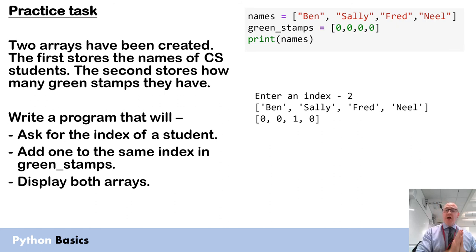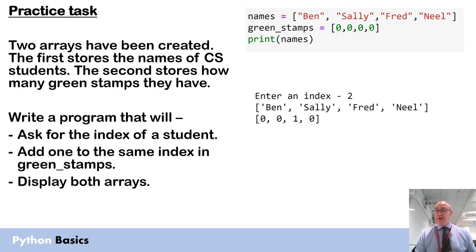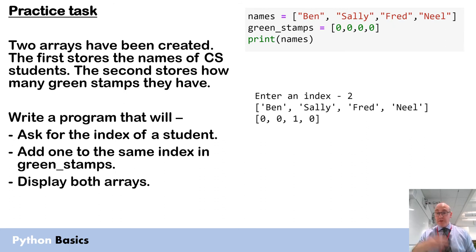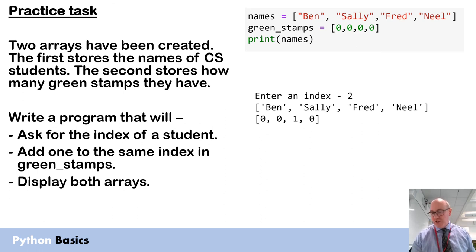In this practice task, have a go and then pause the video before checking the model answer. You have two arrays: names and green stamps. Names are the names of students and green stamps are how many green stamps each student has. Index 0 is Ben, Ben has no green stamps, Sally has no green stamps, Fred has no green stamps, and so on. Ben's green stamps are in index 0, Sally's green stamp total is in index 1 - the index is common between the two arrays. For those who already know better approaches, we haven't introduced 2D arrays or more advanced features yet, so this is how we are going to do it.